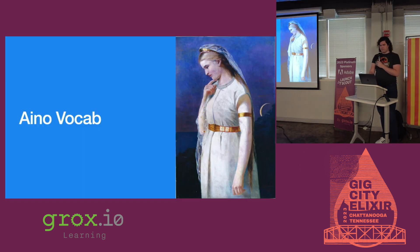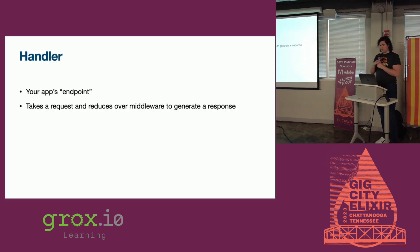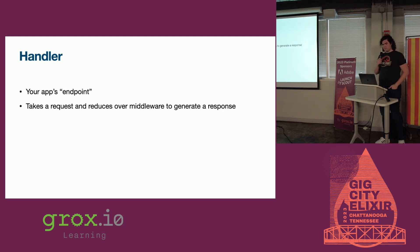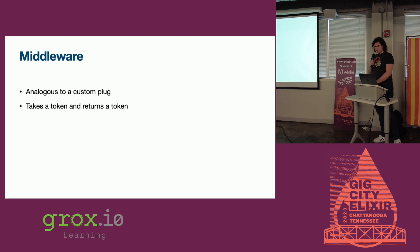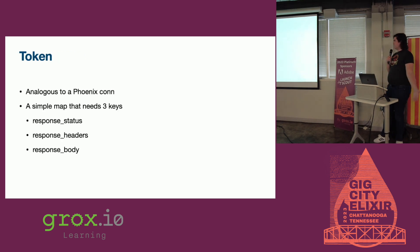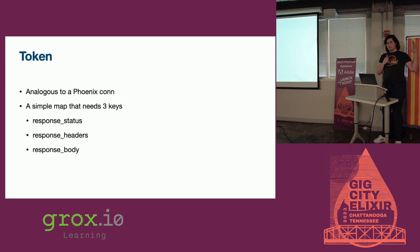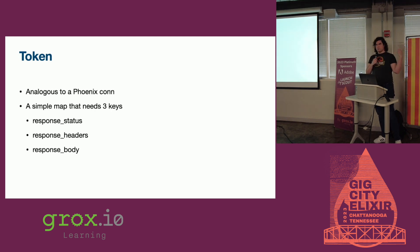We're going to go through a little bit of vocab real quick. Inu has a handler — you can think of this as your endpoint. It takes a request and reduces over a series of middleware to generate a response. Middleware you can think of as kind of like a plug — takes a token, returns a token. A token is kind of like a conn, but it's just a map. When it comes out to Inu, it needs these three keys: a response status, a response header, and body.